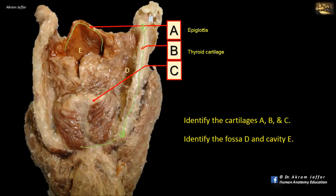C is the cricoid cartilage. Because this is a posterior view, this is the lamina of the cricoid cartilage — the wider part of the ring. The cricoid cartilage is a complete ring; anteriorly it is narrow, but posteriorly it is widened as the lamina of the cricoid cartilage.